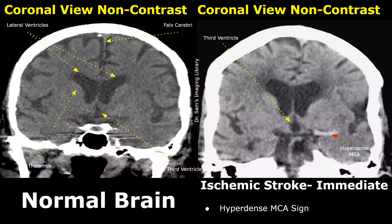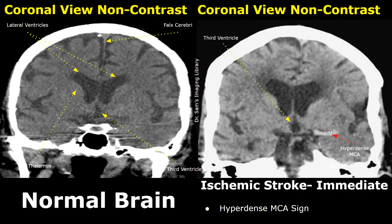These are coronal views showing the brain. The falx cerebri is present between the cerebral hemispheres. These are the lateral ventricles. The thalamus is present at this location. And just below the lateral ventricles is the third ventricle. In this image we have ischemic stroke with hyperdense MCA — we can clearly see a bright MCA over here. It is the earliest sign of an ischemic stroke.